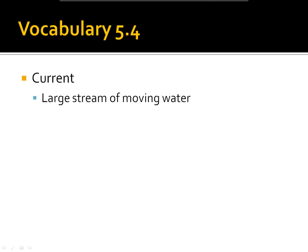The first vocab word for this section was 'current.' It's a large stream of moving water — basically a very big river, but with no banks. It's more of a flow of water in the ocean without any definite walls around it. We did some work with labs on Monday and Tuesday looking at these different types of currents.